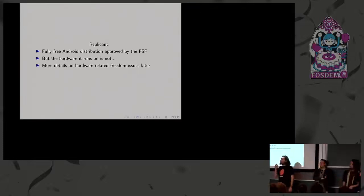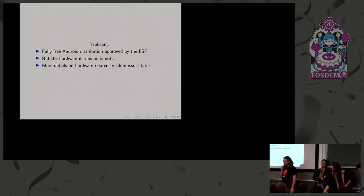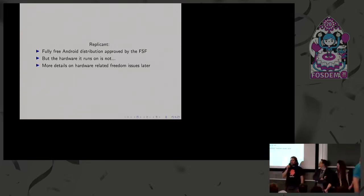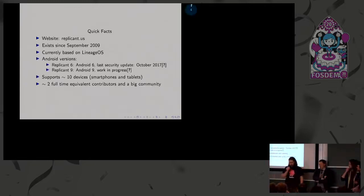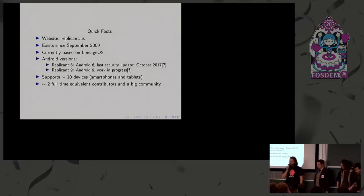Replicant is a fully free Android distribution approved by the FSF, but the hardware is not fully free — it's a smartphone, and we'll see the details later. The website is replicant.us and we've existed since September 2009. We are currently based on LineageOS.